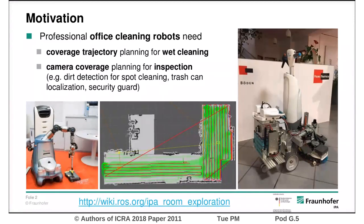For both tasks, the robot needs to navigate through the environment such that it can either cover or inspect the whole floor. Another additional task is the clearance of trash bins, which it needs to locate beforehand. This can be done in the same way as looking for dirt.